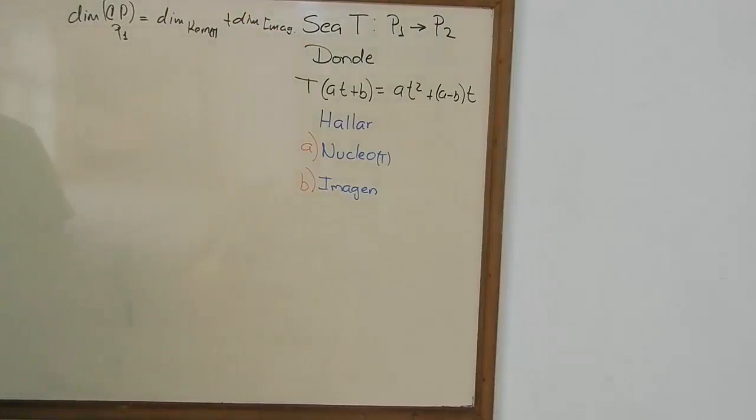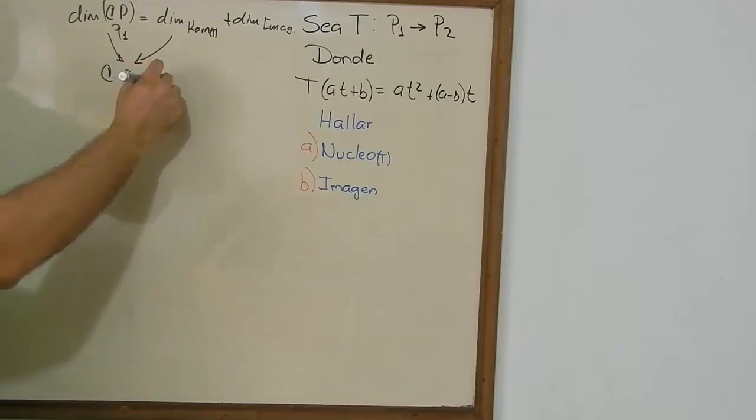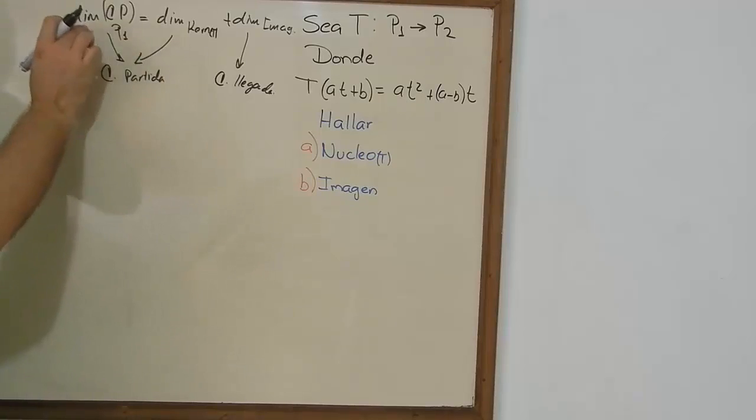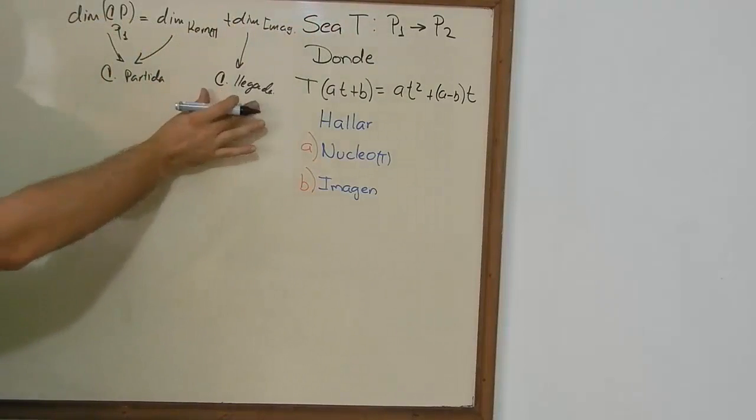So we need to take something really into account. The first two, the dimension of the starting point and the kernel, are related to the starting point. And the dimension of the image is related to the finish point, which is in this case the polynomials of order 2.